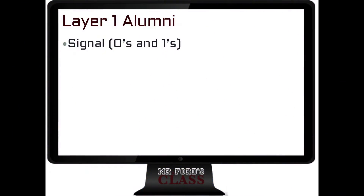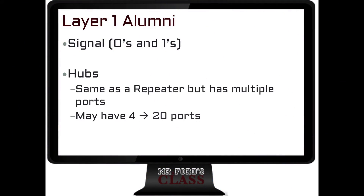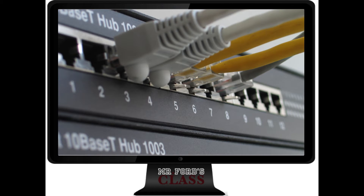Things that you find in layer 1 — and yes, you have to know these, they always show up on exams — include signals, 0s and 1s. Something known as a hub, which is the same as a repeater but has multiple ports, typically four to 20 ports. A hub takes signals, takes those 0s and 1s, and sends them out to everything on the network connected to that hub. It's what we call a dumb device — it just repeats the information very loudly.